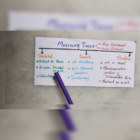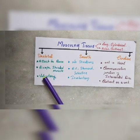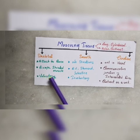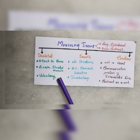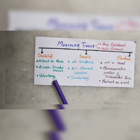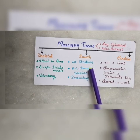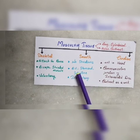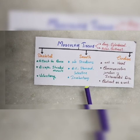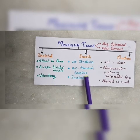Skeletal muscle is striated muscle. It is voluntary — we consciously control it. Smooth muscle is non-striated and involuntary; it is found in the stomach, intestine, and blood vessels. We cannot consciously control smooth muscle.